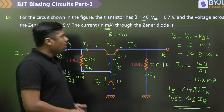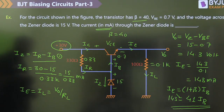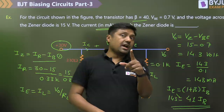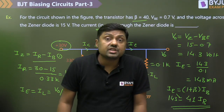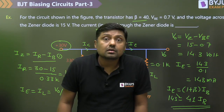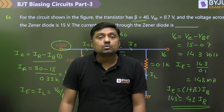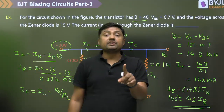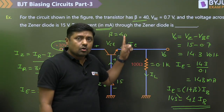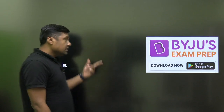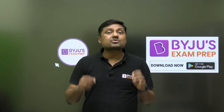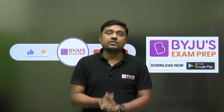This is all about the series voltage regulator. One last important point: in this circuit the transistor is in common collector mode, and that is why it is also called an emitter follower voltage regulator. Thank you for attending the session on Baiju's Exam Prep. Please like the session, subscribe to our channel, and share the link. Thank you very much.